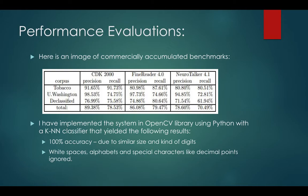I personally implemented the system using the OpenCV library in Python with a KNN (K-Nearest Neighbor) classifier. This yielded 100% accuracy, which was mainly dependent on the similar size and kind of input digits and input images used. The ignoring of white spaces, alphabets, and special characters like decimal points contributed to the 100% accuracy, though as those are taken into consideration, accuracy levels might drop.